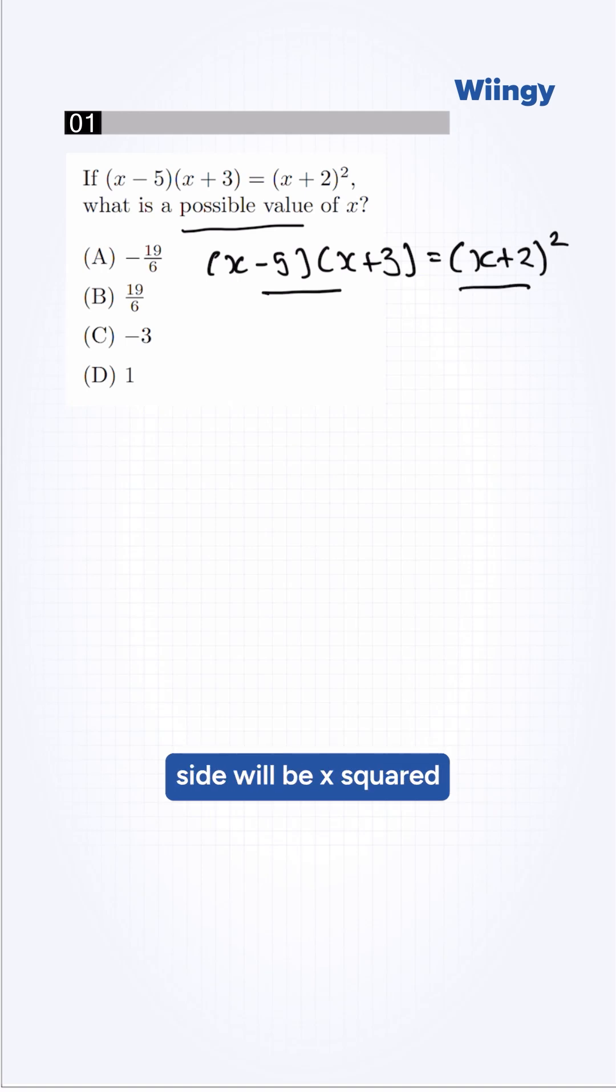So left-hand side will be x squared plus 3x minus 5x minus 15. This will be x squared minus 2x minus 15 is equal to, right-hand side will be, x squared plus 4x plus 4.